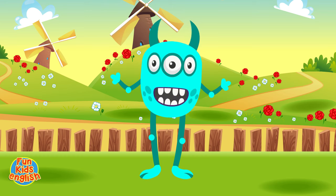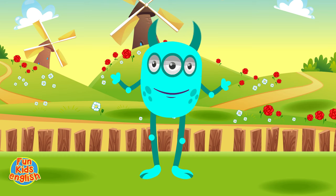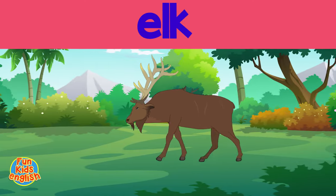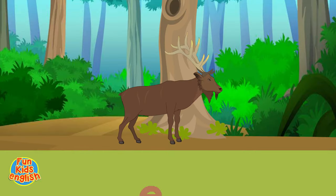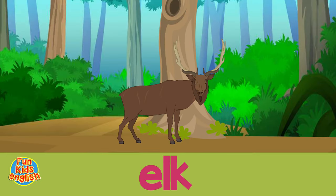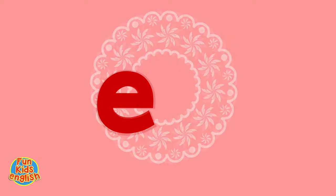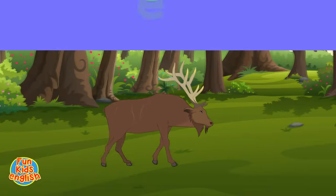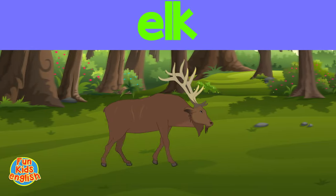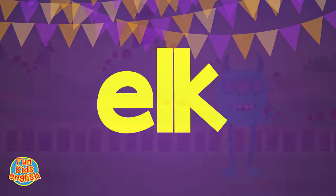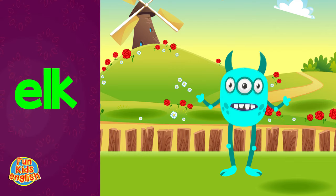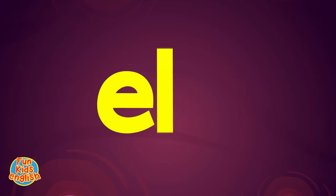What's that, kids? Have you seen one before? That's right, it's an elk. It's an elk, it's an elk. It's an elk, it's an elk, e-a-kuh. It's an elk, it's an elk, e-a-kuh. How do you spell elk? E-a-kuh.